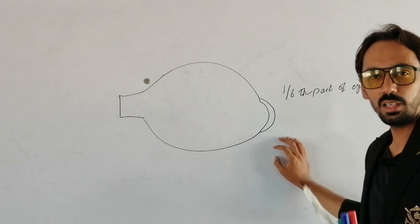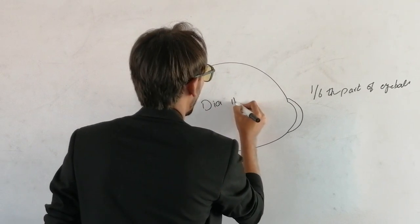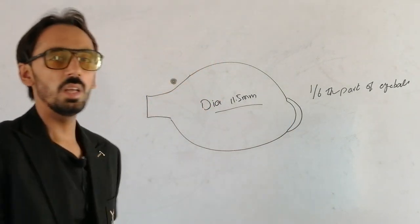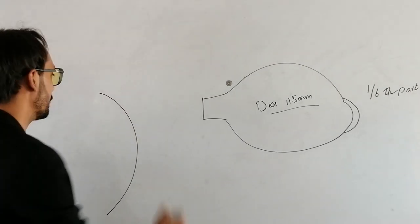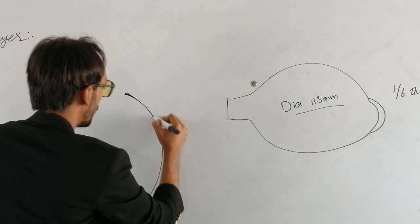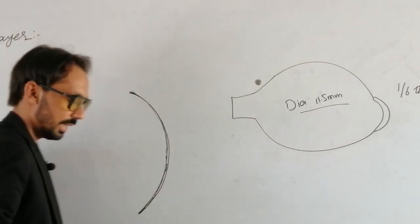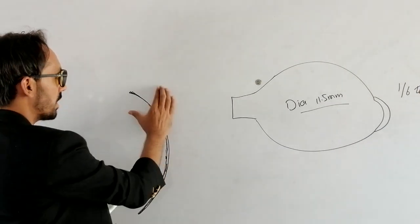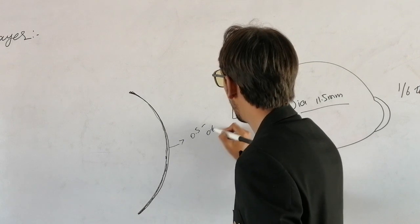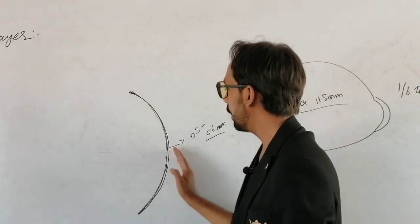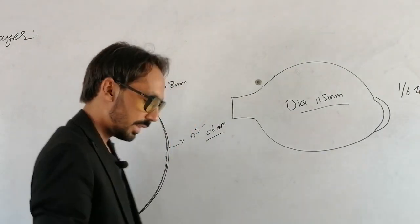The cornea is a very fragile, delicate, and transparent structure. The diameter of the cornea is 11.5 millimeters. Regarding the thickness, the center portion of the cornea is less thick — about 0.5 to 0.6 millimeters — compared to the periphery, which is more thickened at 0.6 to 0.8 millimeters. This is the thickness variation of the cornea.